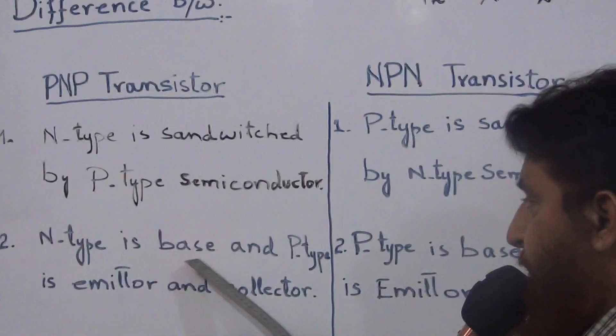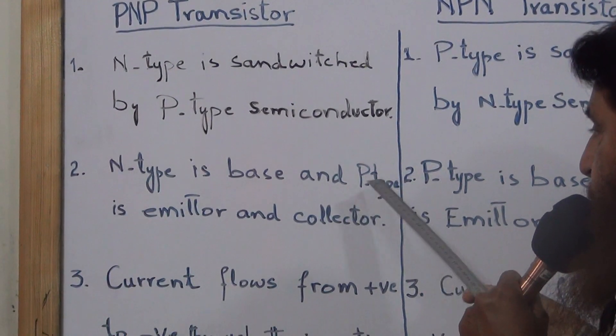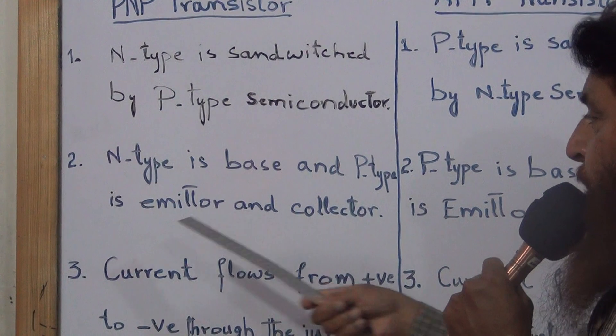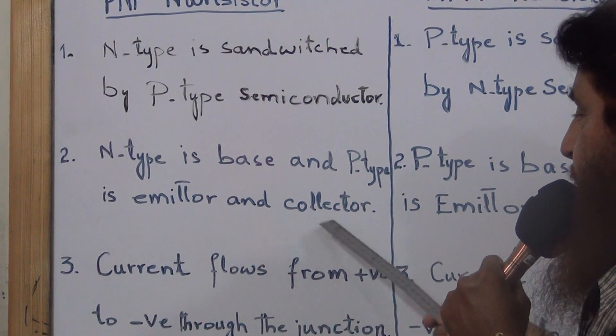In PNP transistor, N-type is the base and P-types are the emitter and collector.